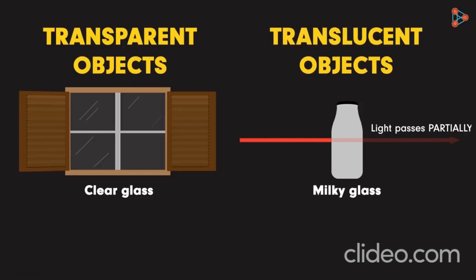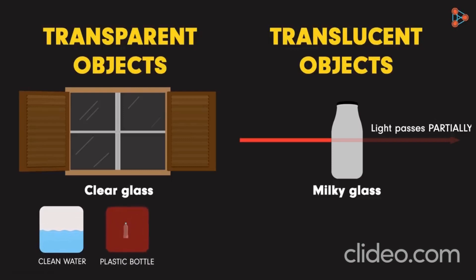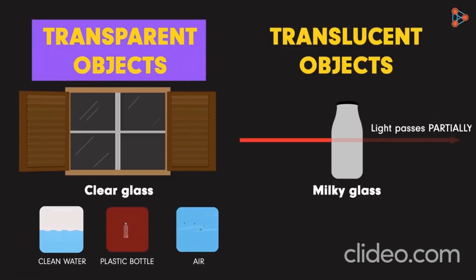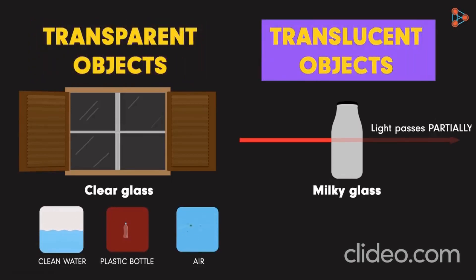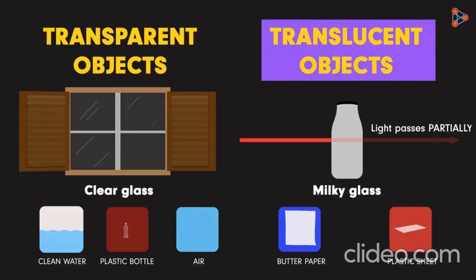We can easily think of examples of opaque objects. But can you think of other transparent or translucent objects? Clean water, glass, clear plastic bottles and air are all examples of transparent objects. Can you think of examples of translucent objects? Butter paper, thin sheet of plastic, and milky glass are a few examples of translucent objects.